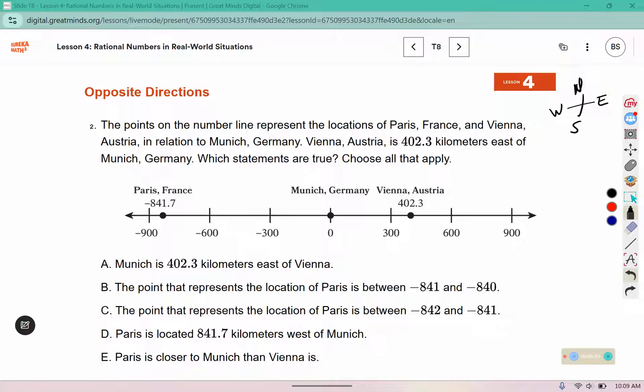Which statements are true? Choose all that apply. Munich is 402.3 kilometers east of Vienna. Well, if we went east from Vienna, we would still be traveling this way. Is Munich east of Vienna? No.